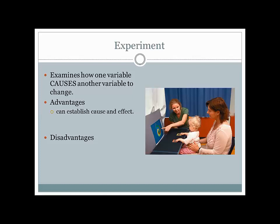Confounding variables are variables you are not controlling and not measuring that could have an effect on your experiment. For example, let's say you developed a new intervention to help kids gain self-esteem. For one group you deliver this intervention and measure their self-esteem afterward; in another group you do nothing — that's your control group. A confounding variable could be gender: if there are all boys in one group and all girls in another, you may have found gender differences in self-esteem rather than differences based on your intervention. So while experiments try to eliminate outside influences, you have to make sure they're designed well enough ahead of time.